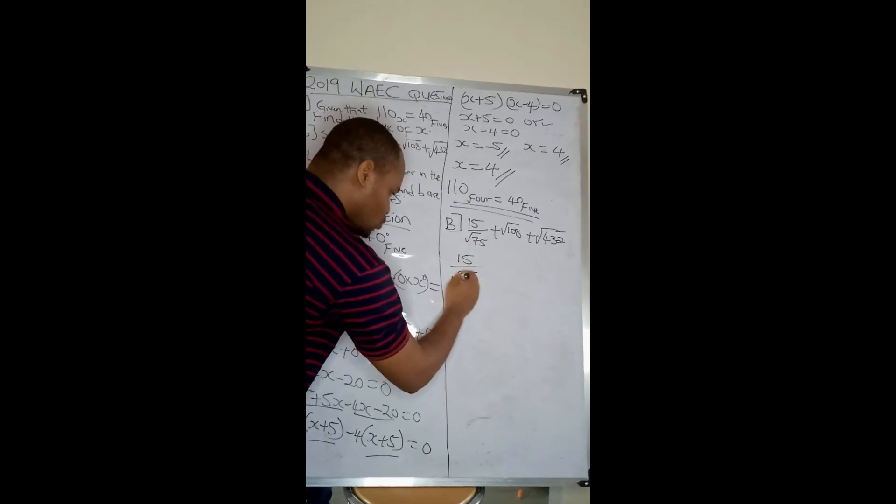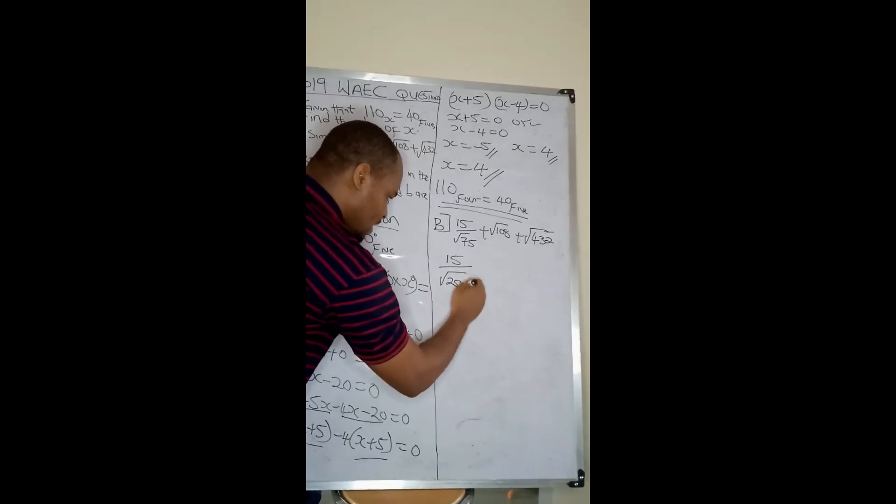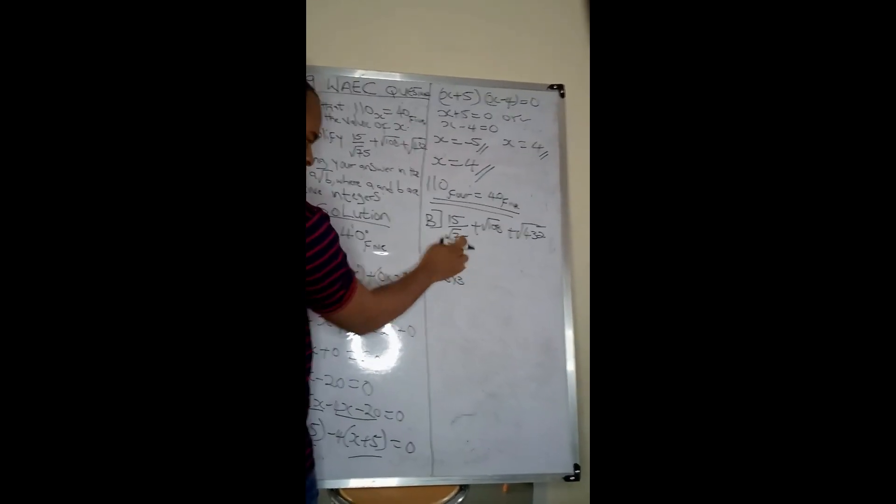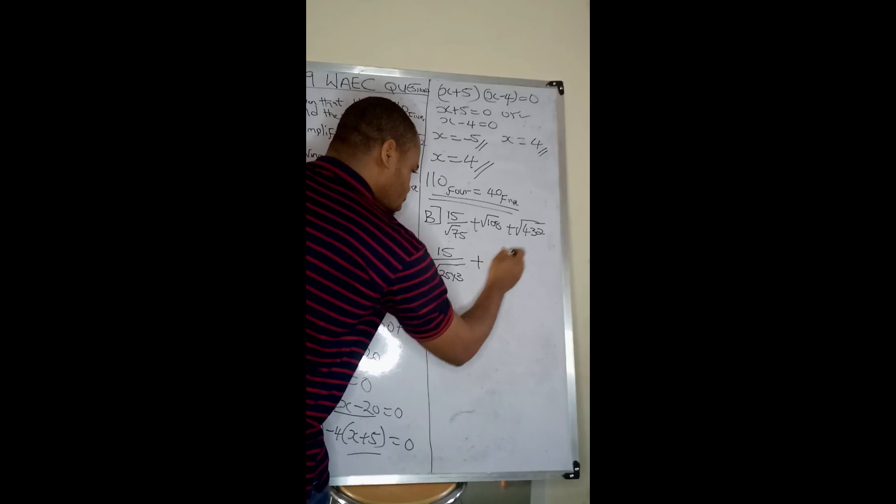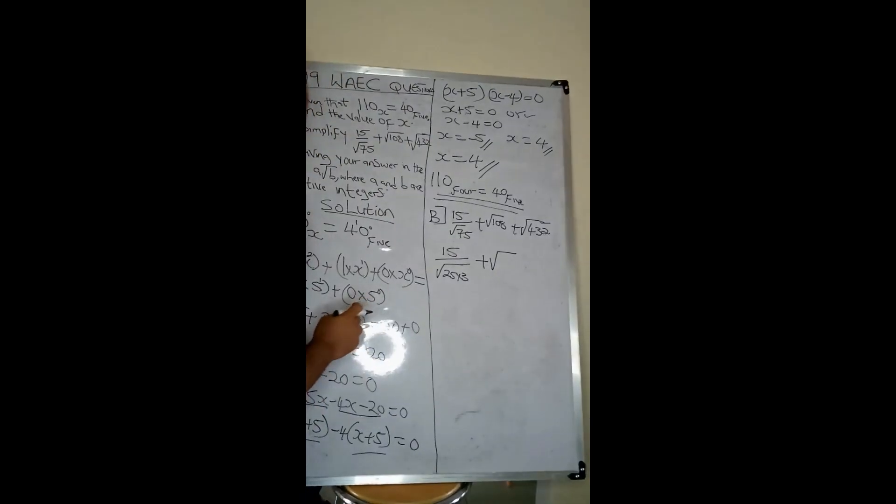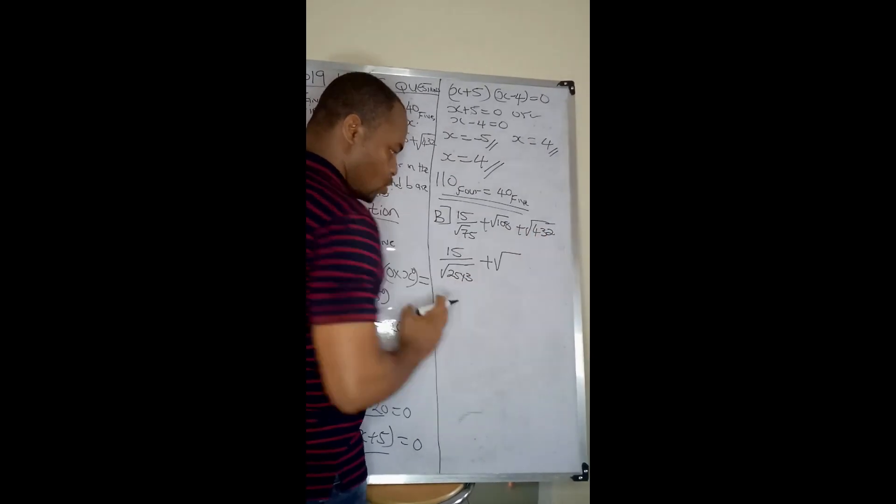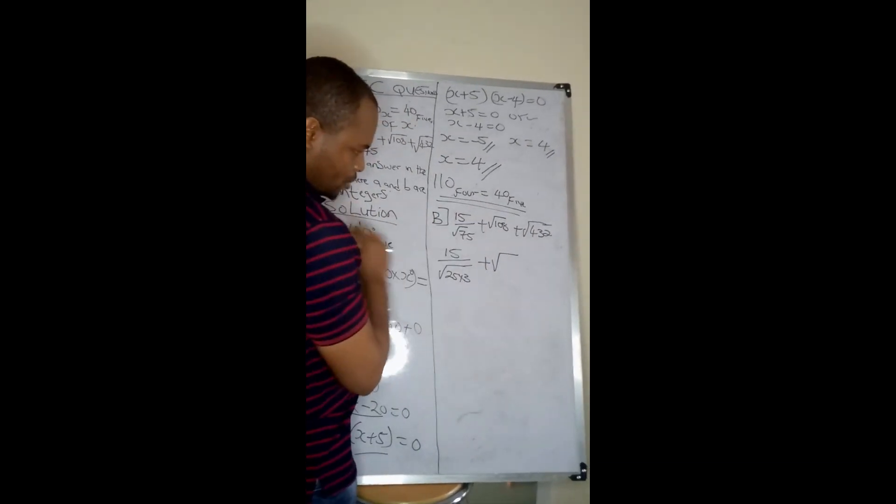I want to reduce 75 into a perfect square and a non-perfect square. I'll have 15 all over, this root 75 I can write it as 25 times 3 because 25 is a perfect square. 25 times 3 is 75, plus root, let's see, because I already have root 3 here, I can check if I can reduce this one to also root 3.